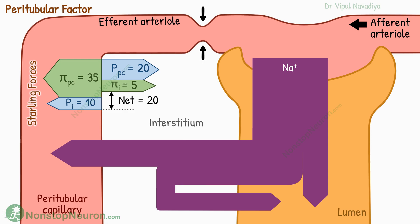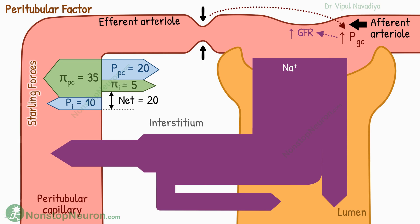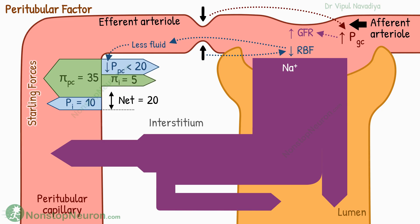This happens only when changes in GFR are due to changes in efferent arteriolar resistance. Increased efferent arteriolar resistance increases hydrostatic pressure in the glomerular capillary and thereby increases GFR. This increased GFR increases the sodium load in the tubule, which tends to increase sodium excretion. But look what happens in parallel: increased efferent arteriolar resistance also decreases renal blood flow. Due to reduced blood flow, less fluid enters the peritubular capillary, so hydrostatic pressure there falls below 20 mmHg.